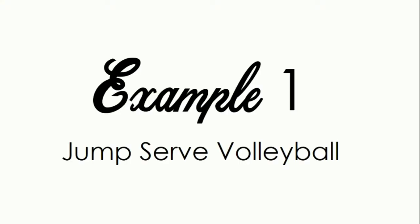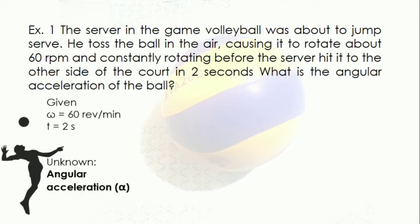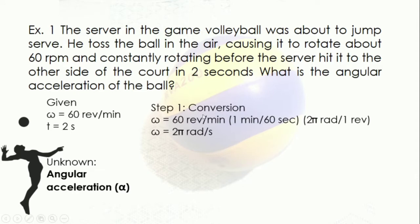Example one is the jump serve volleyball. The server in the game volleyball was about to do the jump serve; it tossed the ball in the air causing it to rotate about 60 rpm, constantly rotating before the server hit it to the other side of the court in two seconds. What is the angular acceleration? The given is angular velocity of 60 rpm and time of 2 seconds. Since the units are not uniform, we convert 60 rpm into rad per second.